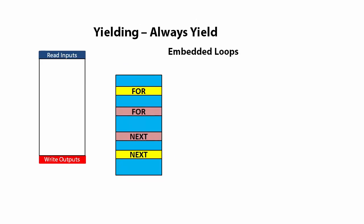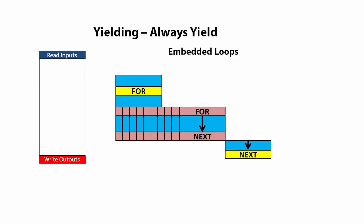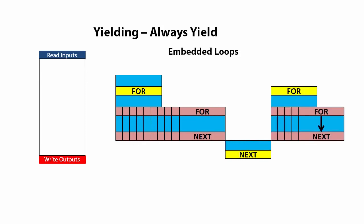What if you have a loop inside of a loop? Well, it will yield at the bottom of this loop and keep doing that until it is done. Then on the next scan it will pick up here and yield at the bottom of this loop. Then on the next scan after that it will fall back into this loop and repeat the whole process again. Exactly what you would expect.